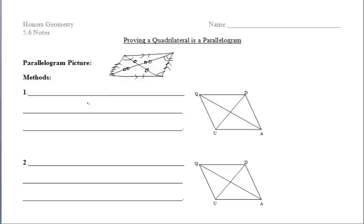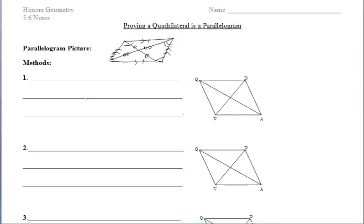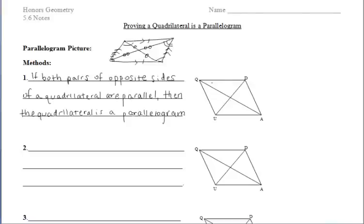There are five different ways to prove that a quadrilateral is a parallelogram. The first one says if both pairs of opposite sides of a quadrilateral are parallel, then the quadrilateral is a parallelogram. This is just the reverse of the definition of a parallelogram — if we have a four-sided figure and both pairs of opposite sides are parallel, that's enough to say it's a parallelogram.